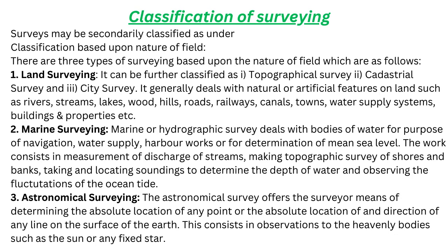Secondary Classification of Surveying — three types based upon the nature of field. Number 1: Land Surveying. It can be further classified as Topographical Survey, Cadastral Survey, and City Survey. It generally deals with natural or artificial features on land such as rivers, streams, lakes, hills, roads, railways, canals, towns, water supply systems, buildings and properties, etc.